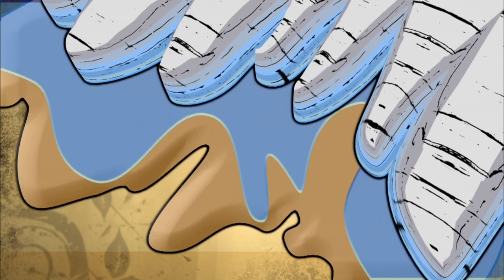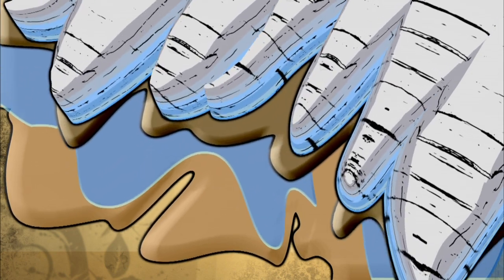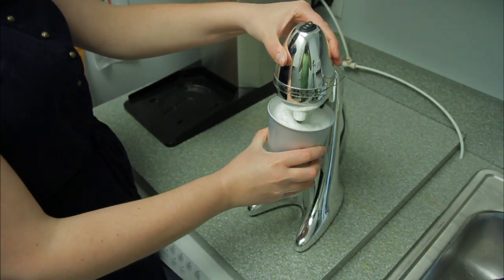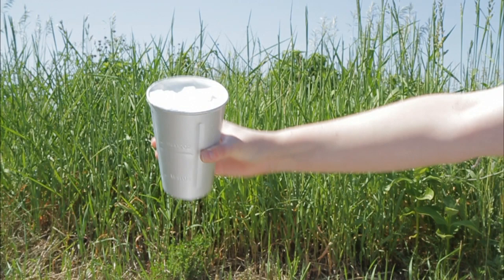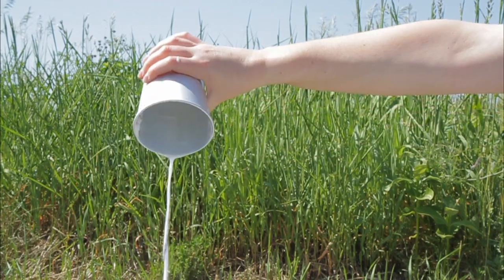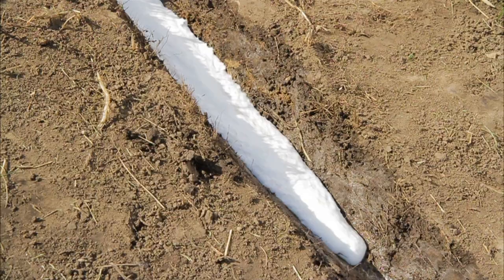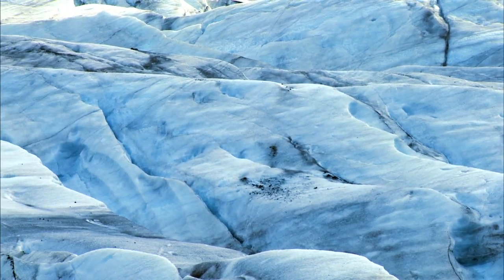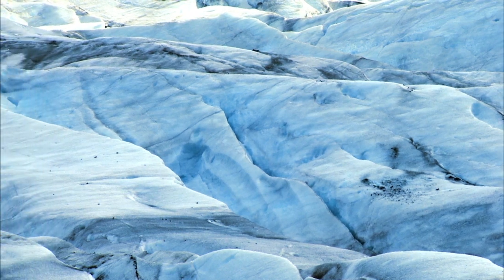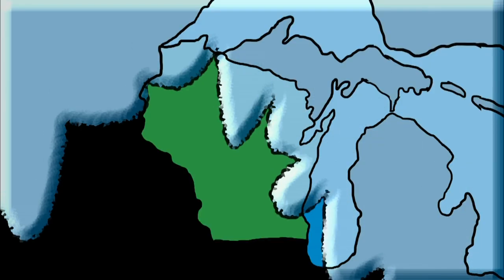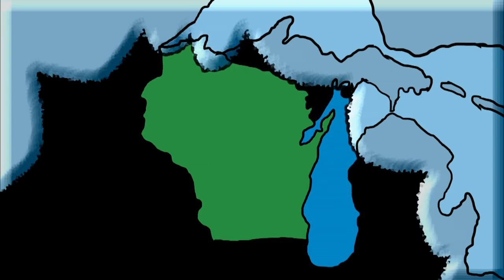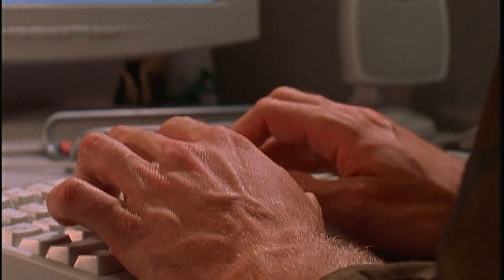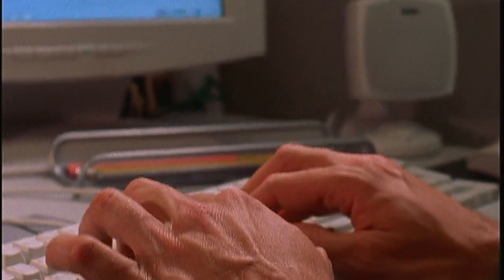To get an idea of how these glaciers flowed in lobes, try this experiment. Mix ice and water in a blender until it's the consistency of a slushie. Then pour it on uneven ground and watch how it forms lobes that flow into the lower places. Of course, glacial ice was over a thousand feet thick, which made it flow slowly. Knowing that the glaciers flowed in irregular lobes in different directions, and that there were four different times when glaciers flowed across Wisconsin, scientists began assembling clues to the mystery of the Driftless.